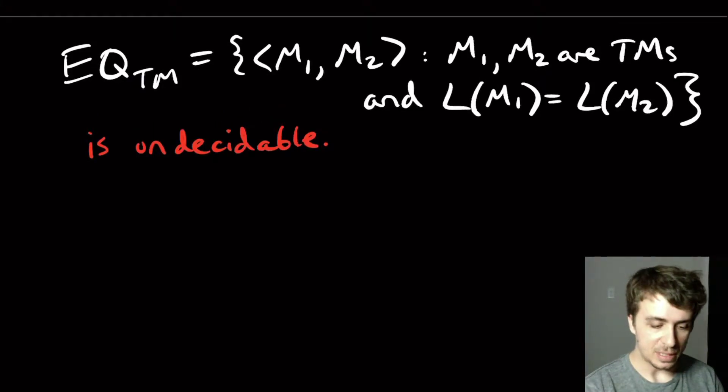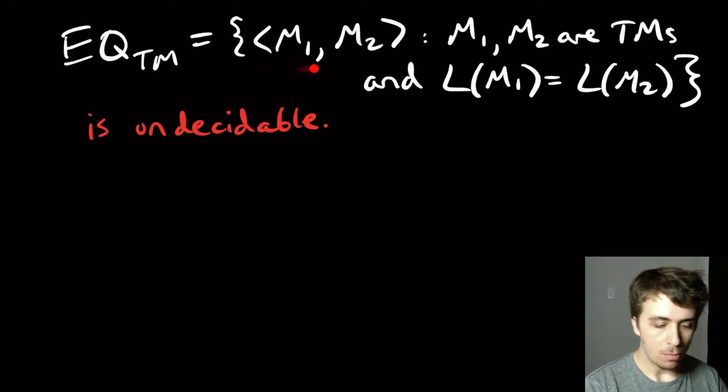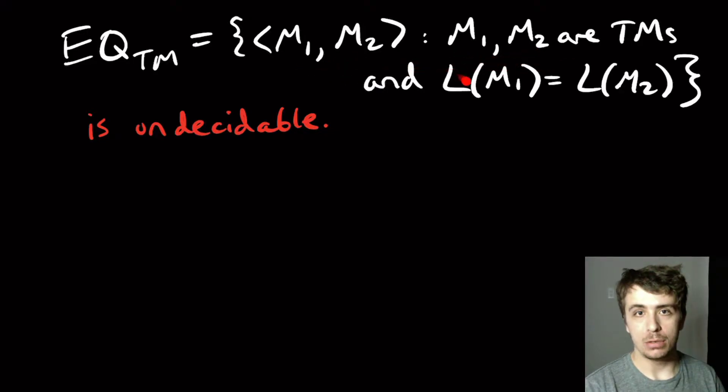Today we'll be proving that this language EQTM, which is the set of all pairs of Turing machines M1 and M2, where they have the exact same language.